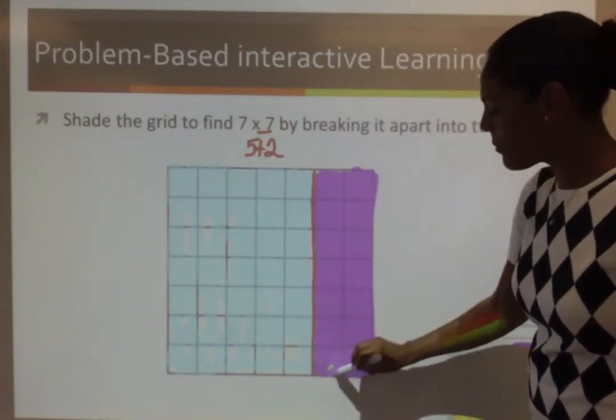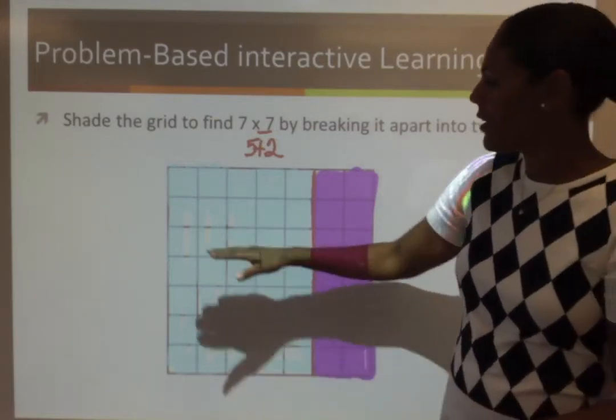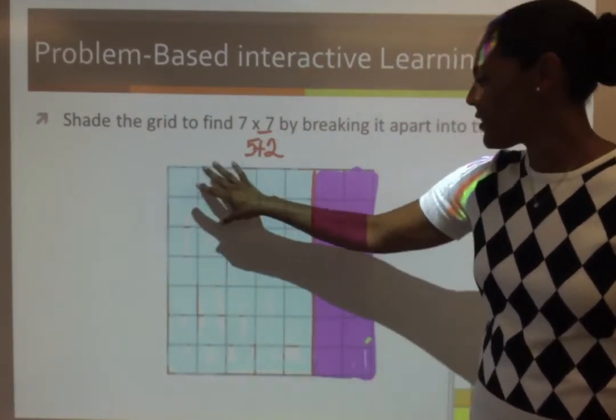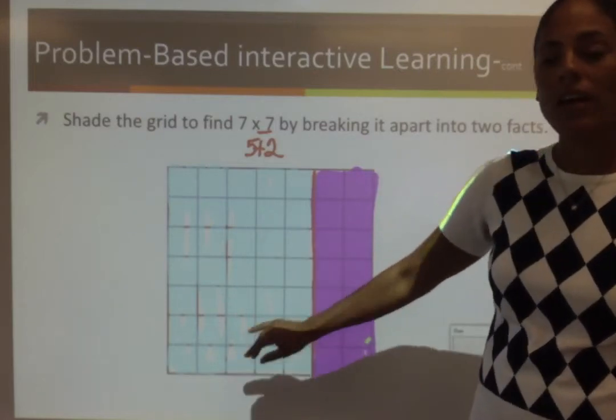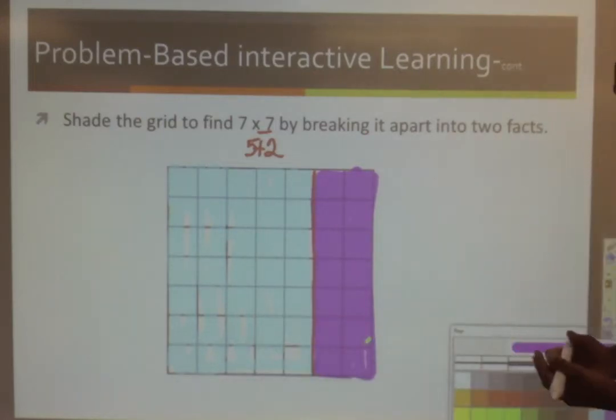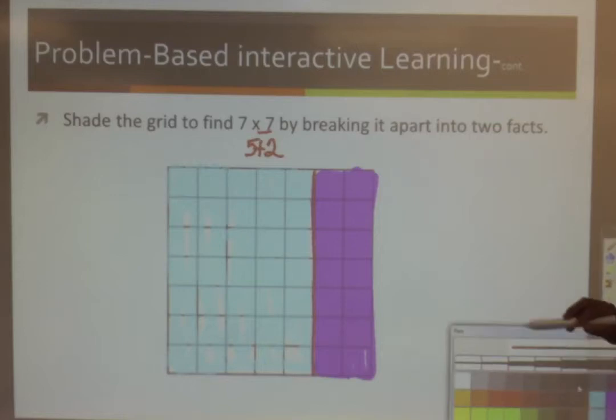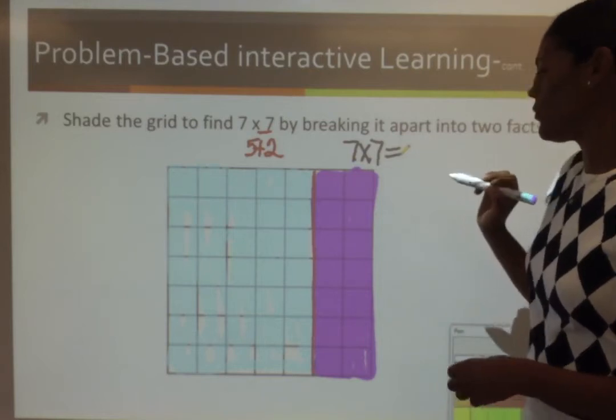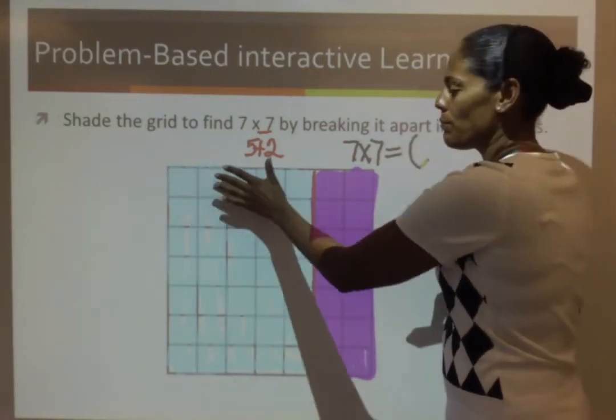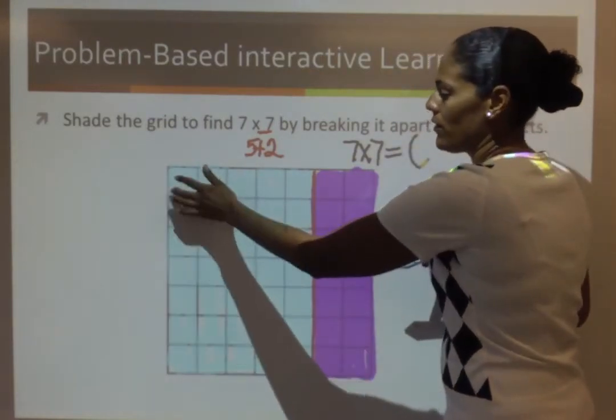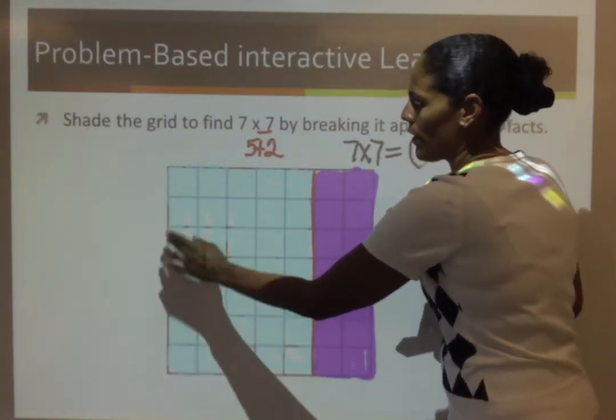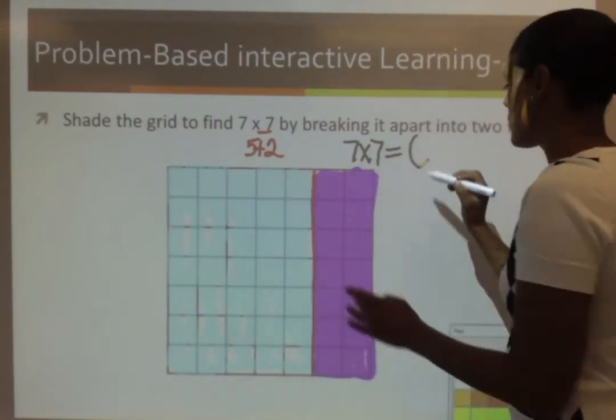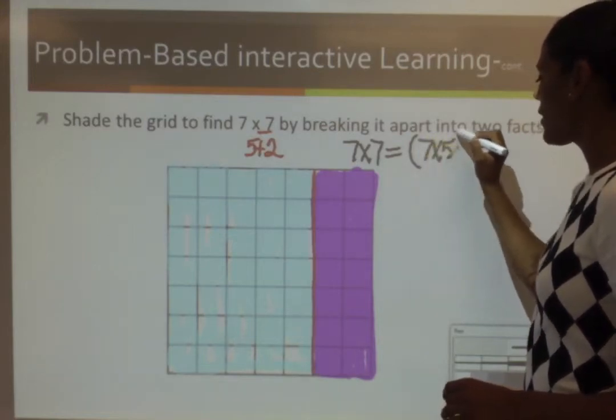So, now my grid represents, I still have 7 rows, but this side is set of 5 columns and this side has 2 columns. So, now we need to write our equation for this problem. 7 times 7 is equal to, this blue side is 7 rows times 5 columns, 7 rows times 5 columns.